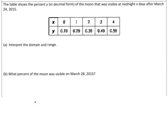Here's one more word problem that's talking about the visibility at midnight of the moon once in March of 2015. So, go ahead and interpret the domain and range. Talk about what it has to do with this specific problem. Then, talk about what percentage of the moon was visible on March 28, 2015. Go ahead and try this on your own, then check back to see what your answers are.